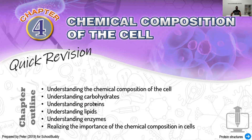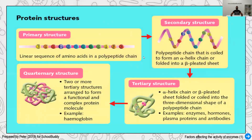First we're going to jump into protein and look at the structure of protein. In this diagram we can see the structures, which are classified into four structural levels: primary, secondary, tertiary, and quaternary. Each of these colored compounds is called an amino acid. All the amino acids are lined up in a linear single sequence, forming a polypeptide chain. When they are in a linear sequence, this is called the primary structure.